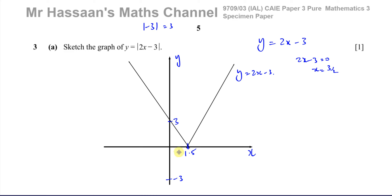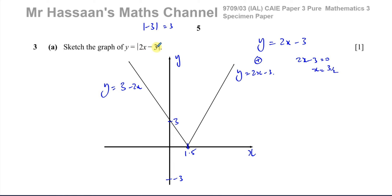So that's how the graph of this function looks. You can think of it as the positive argument and the negative argument of the curve. The positive argument branch is when you just remove the modulus sign — that gives y equals 2x minus 3. The negative argument branch is when you change the sign of everything inside, giving y equals 3 minus 2x. You can see it has gradient negative 2 and passes through 3 on the y-axis. Together, these form the graph of y equals the modulus of 2x minus 3.